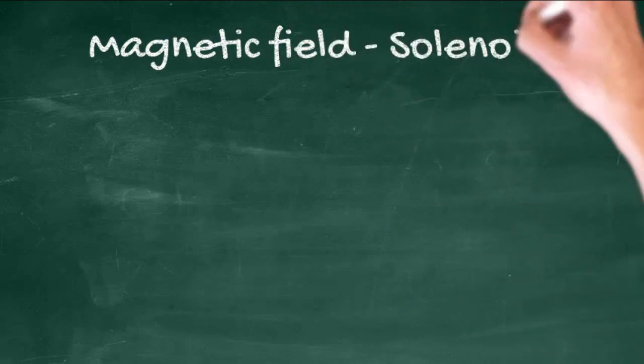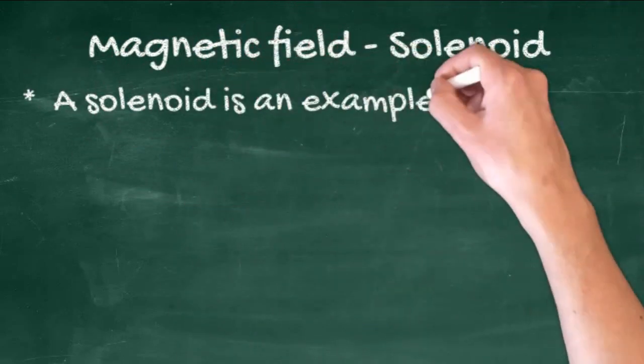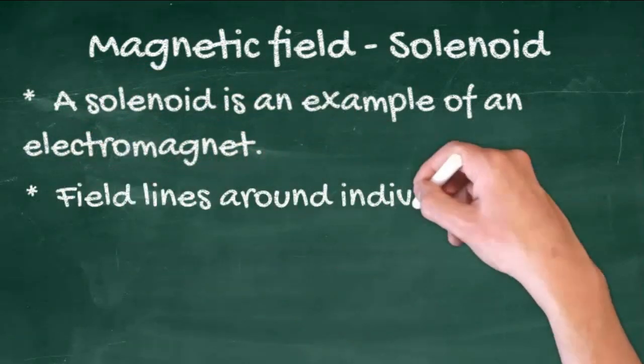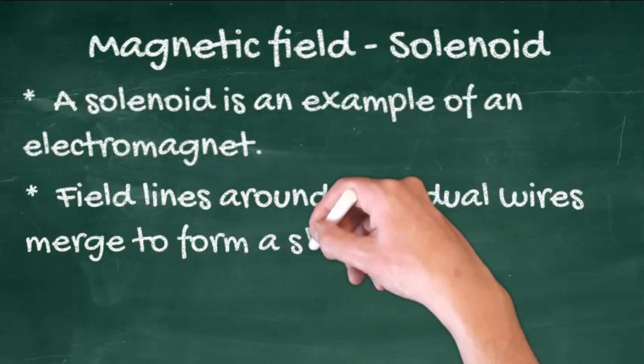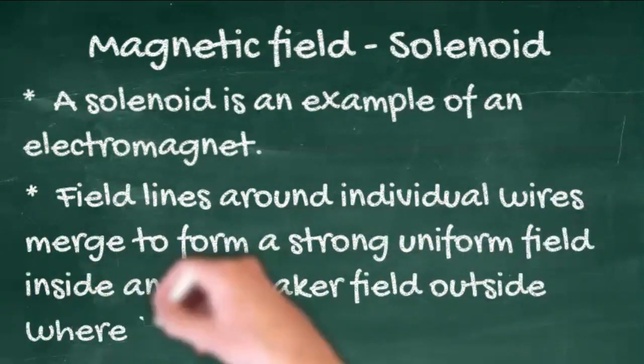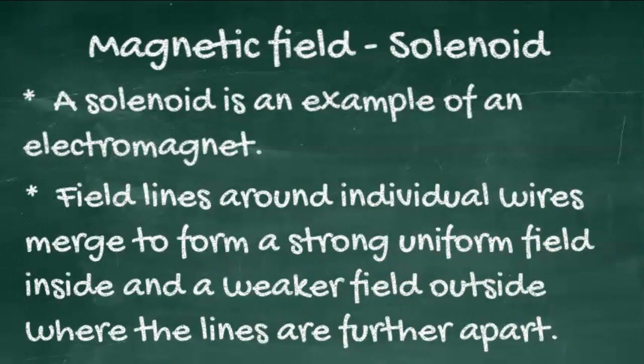Wires can also be wrapped into coils, and we call these coils of wires solenoids. A solenoid is an example of an electromagnet. Field lines around the individual wires merge to form a strong uniform field inside and a weaker field outside.